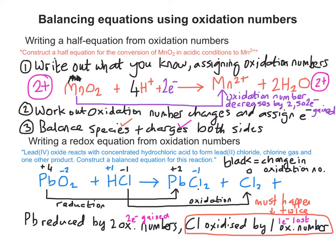So lead is reduced by two oxidation numbers, going from plus 4 to plus 2. And chlorine is oxidised by one oxidation number. It's gone up from minus 1 to 0. But for lead to be reduced by two oxidation numbers, chlorine would have to be oxidised by one oxidation number twice.